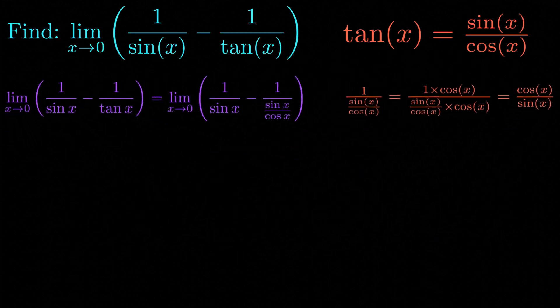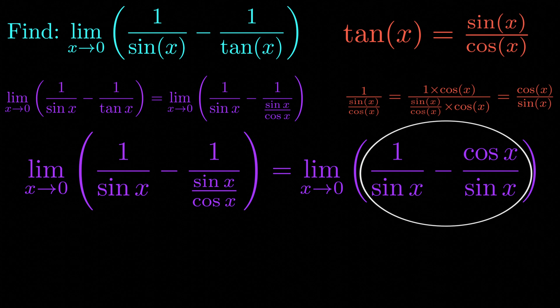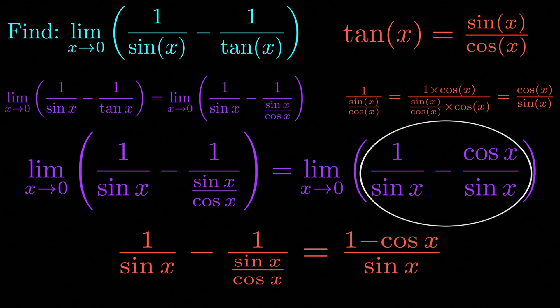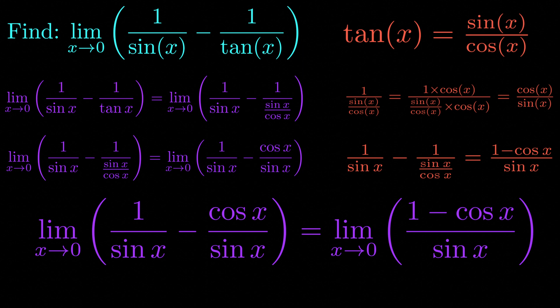This allows us to rewrite the limit as the limit as x approaches 0 of 1 over sine of x minus cosine of x divided by sine of x. The quantity inside the limit can be simplified via cross multiplication, giving us 1 minus cosine of x divided by sine of x. So we rewrite our limit as the limit as x approaches 0 of 1 minus cosine of x divided by sine of x.